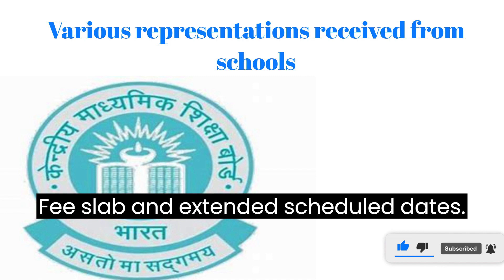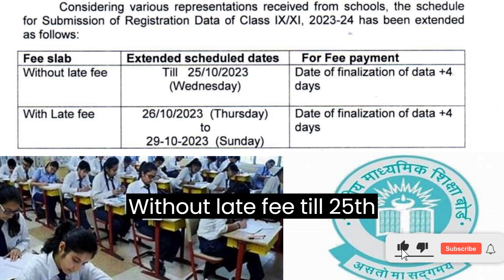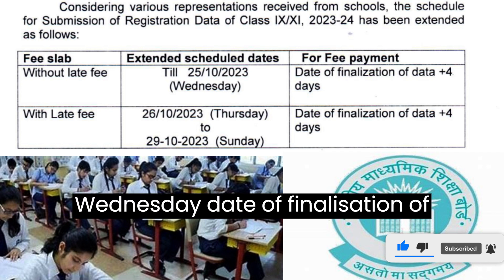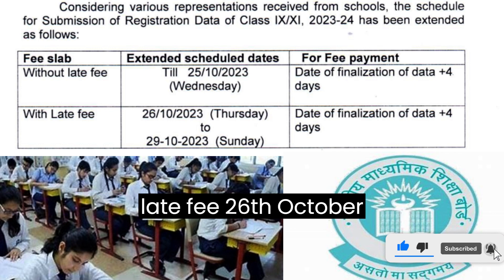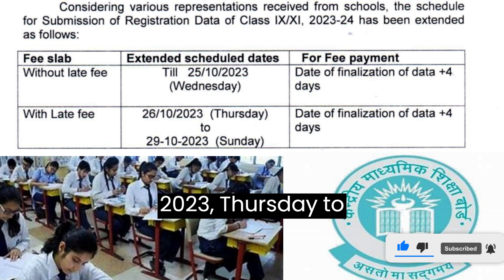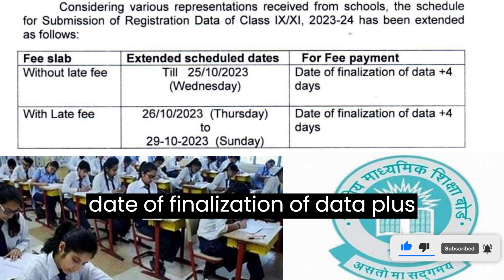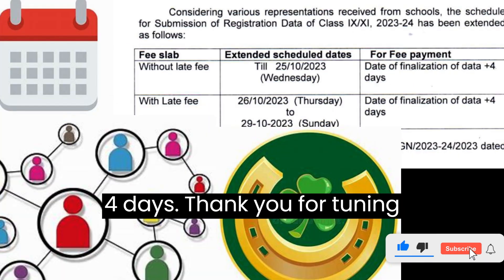Fee slab and extended scheduled dates. Without late fee: till 25th October 2023, Wednesday — date of finalization of data plus 4 days. With late fee: 26th October 2023, Thursday to 29th October 2023, Sunday — date of finalization of data plus 4 days. Thank you for tuning in.